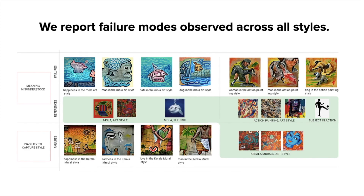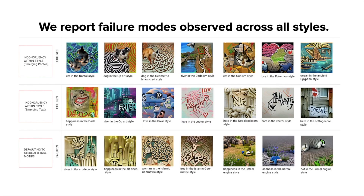The failure modes we found were interesting because they were very unique to text-to-image generation. For example, one failure mode was that the prompt could be misunderstood owing to multiple different interpretations — some generations showed the model generating for a different parsing of the prompt or a different meaning of one of the keywords. Another failure mode was when the text of the prompt would emerge in the generations, potentially as a compensatory technique on the model's part to optimize towards the prompt.